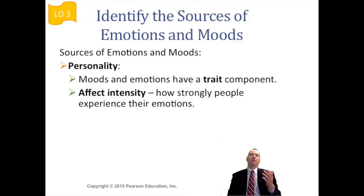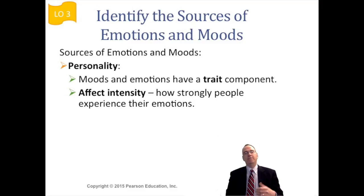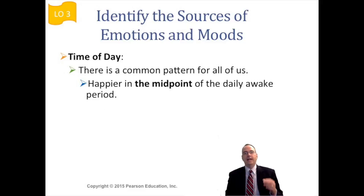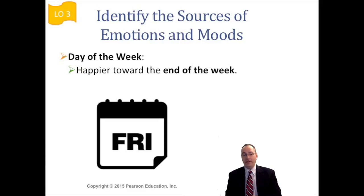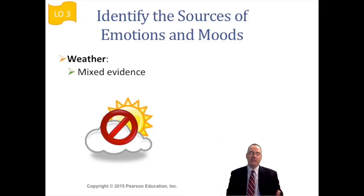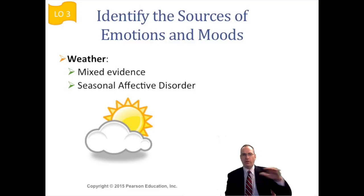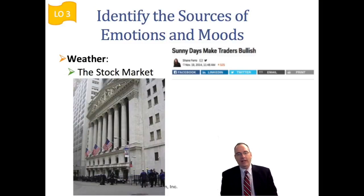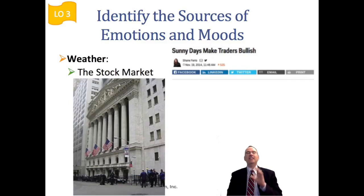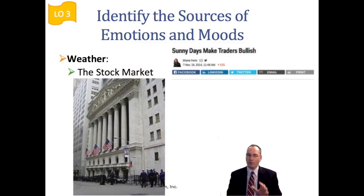What are the sources of emotions and moods? First, personality — there's a trait component. Some people are naturally placid, others are naturally hyper, and there's a matter of intensity in the personality component. There's also time of day — people tend to be happier at the midpoint of the day and at the end of the work week. Regarding weather, the book says mixed evidence, but there is evidence for seasonal affective disorder (SAD), where overcast conditions can worsen depression. There's even an interesting finding that the stock market does better on sunnier days — which shows we're not as rational as we think.